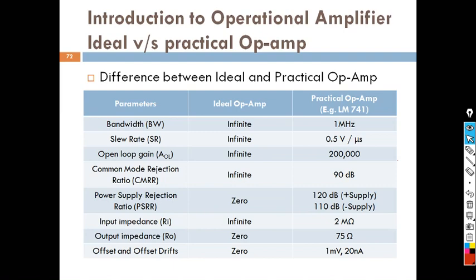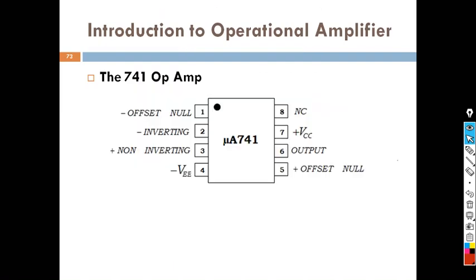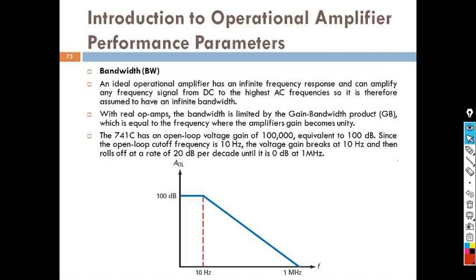So now we will see these one by one. First one is bandwidth. In this example we will take the operational amplifier 741 for our explanation purpose. Bandwidth is nothing but a range of frequency over which my amplifier works.